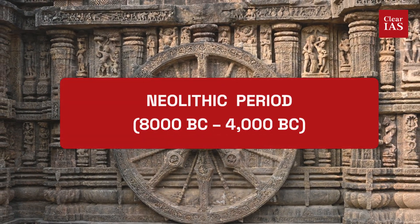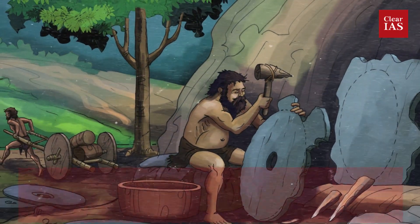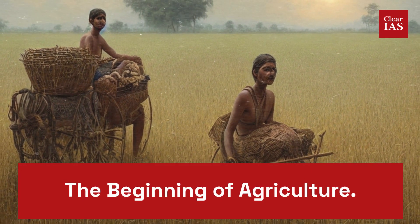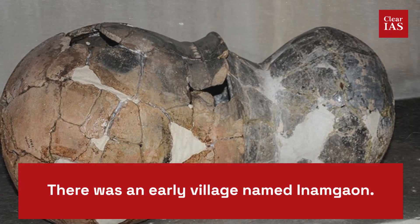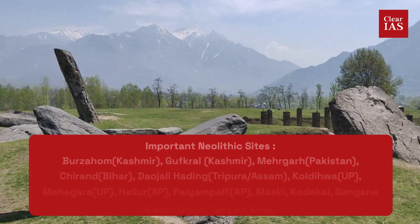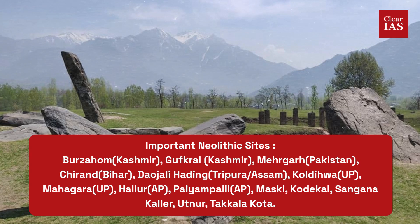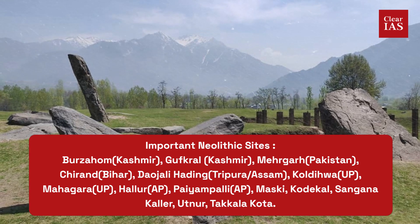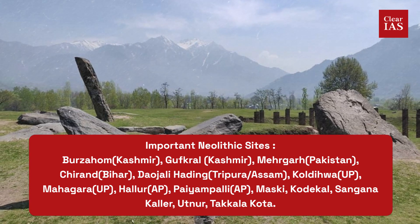Moving on to the Neolithic period, it started at around 8,000 BC till 4,000 BC. The wheel was discovered during this period. This era also marked the beginning of agriculture, and there was an early village named Inamgaon. Some important Neolithic sites are Brahmagiri and Adichanallur.